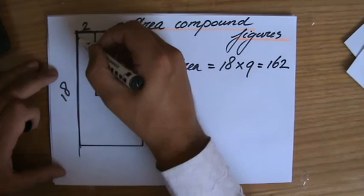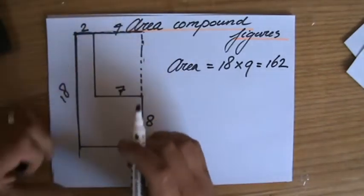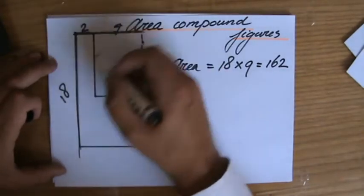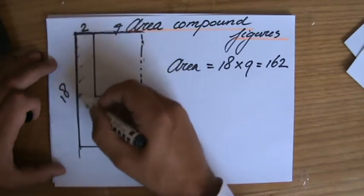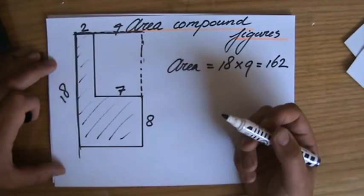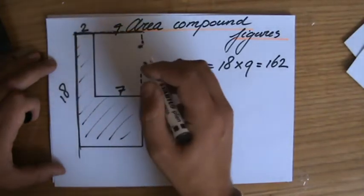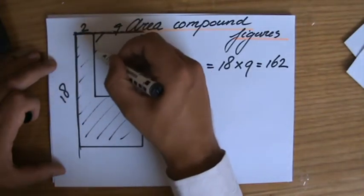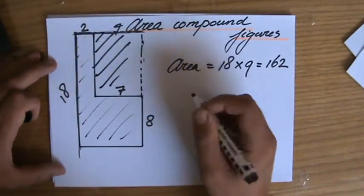So is the area, is that 162? Is the total area 162? Well yeah the total area is but I'm only interested in this part. So I'm going to take a little bit away of that 162. Now how much do I have to take away? Well this part I have to take away. And what is the area of that part?